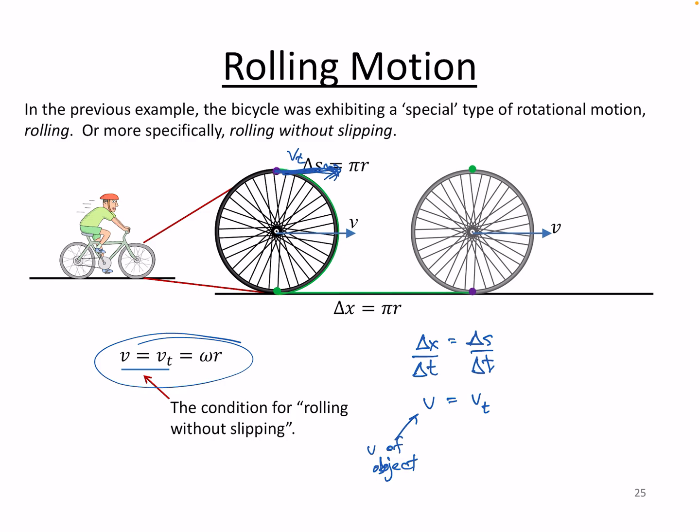That's where this relationship comes from. In addition, we know that the tangential velocity of the wheel is related to omega times r.